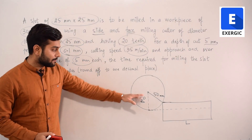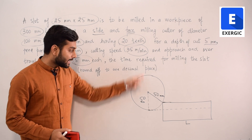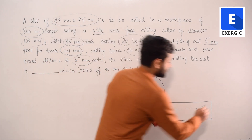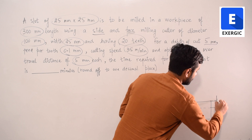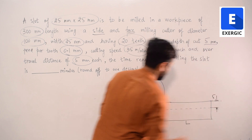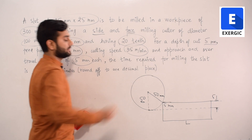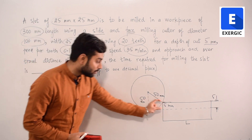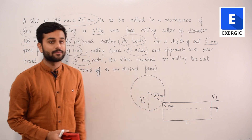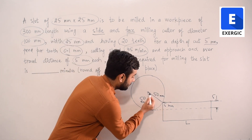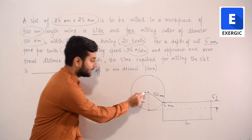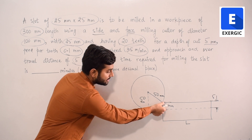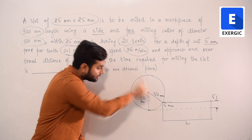Looking at the diagram: this is the cutter with diameter 100 mm (radius 50 mm), and the depth of cut is 5 mm. You can clearly see that since the depth of cut is less than the radius, the point of contact will be below the horizontal level of the center. This is the case we have discussed, where we calculate the compulsory approach.